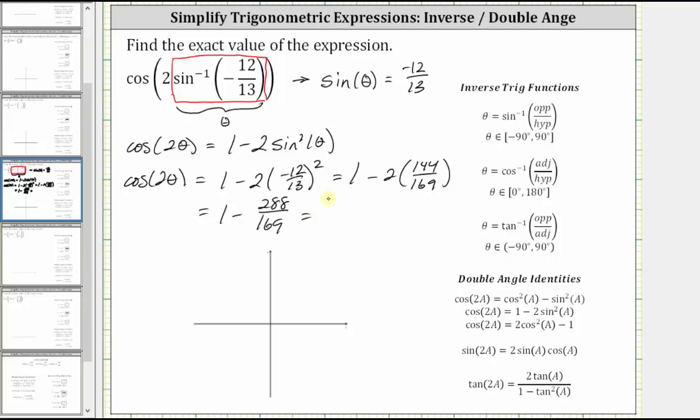And of course, one is equal to 169 one sixty-ninths. And 169 minus 288 is equal to negative 119, giving us negative 119 one hundred sixty-ninths.